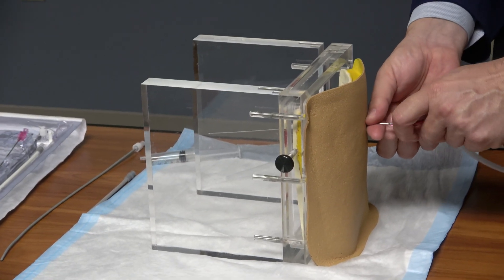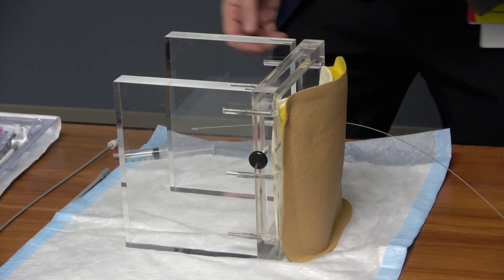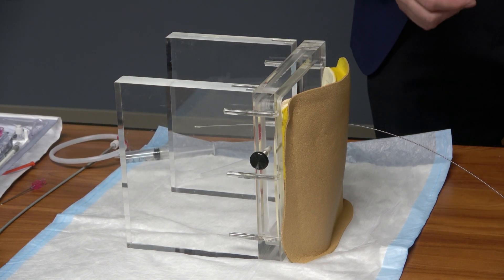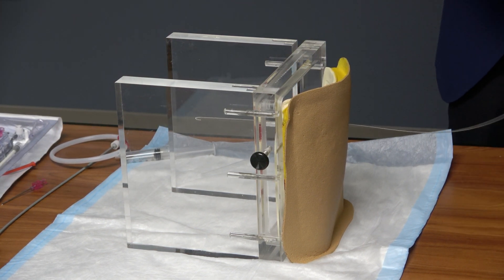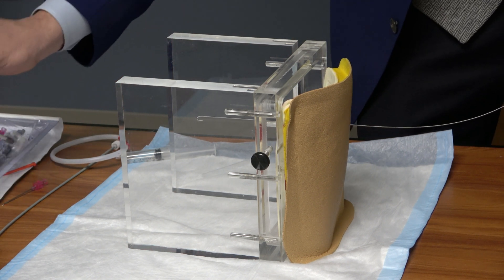Now I remove the syringe, the needle, have the guide wire in there. It's very important to do the dilator first. It's very important to dilate the fascia, if not, you're gonna have trouble passing the softer catheter.